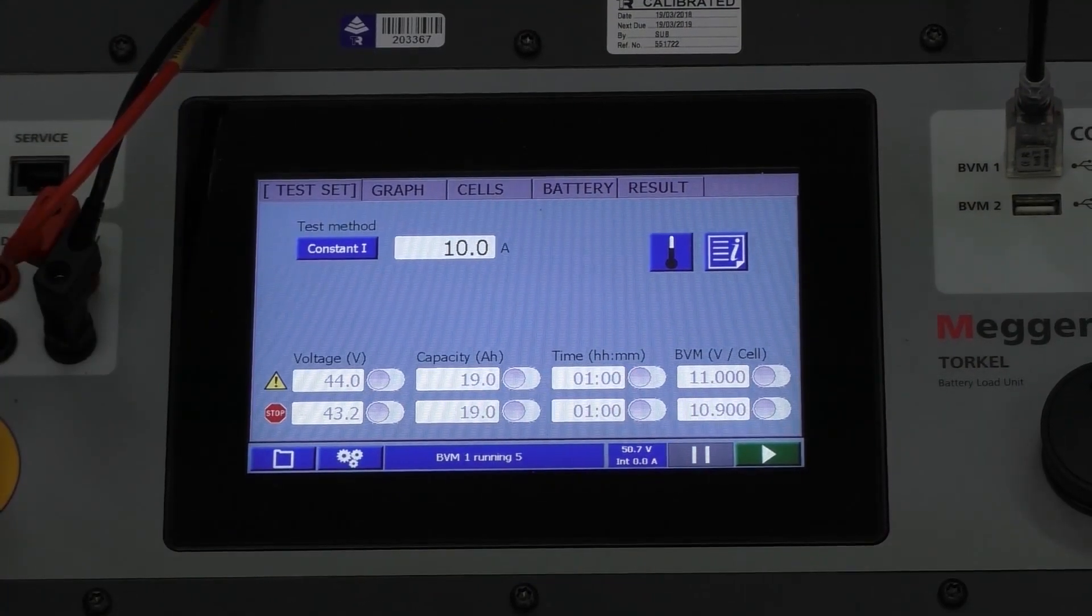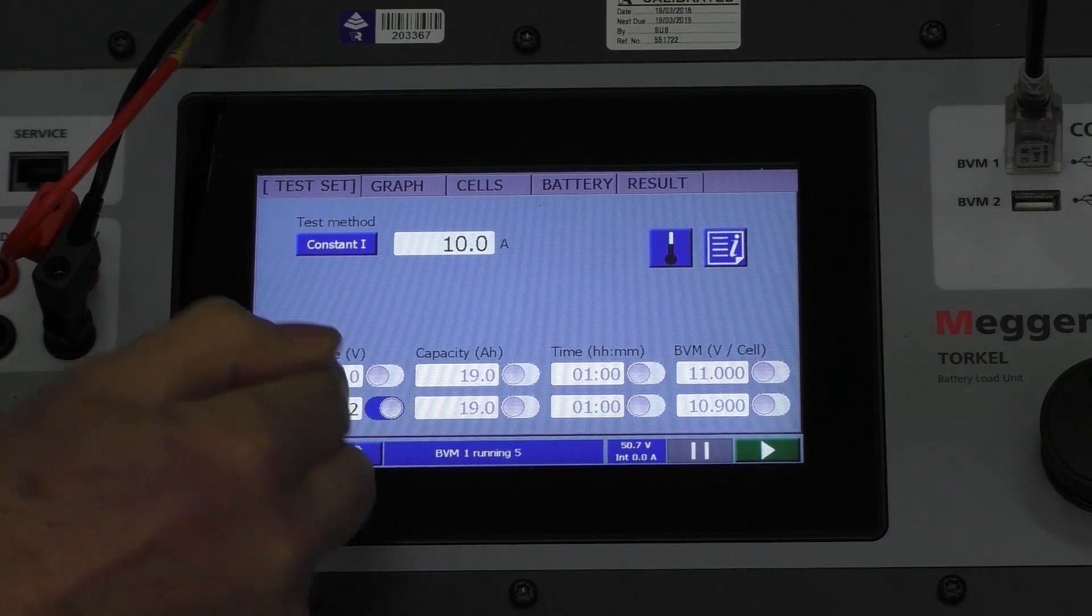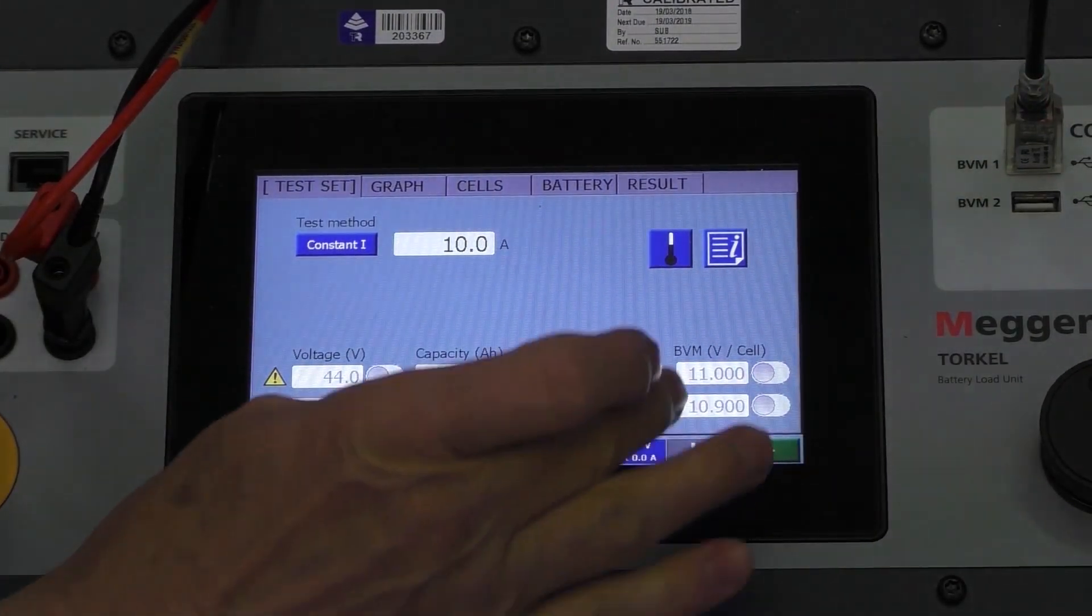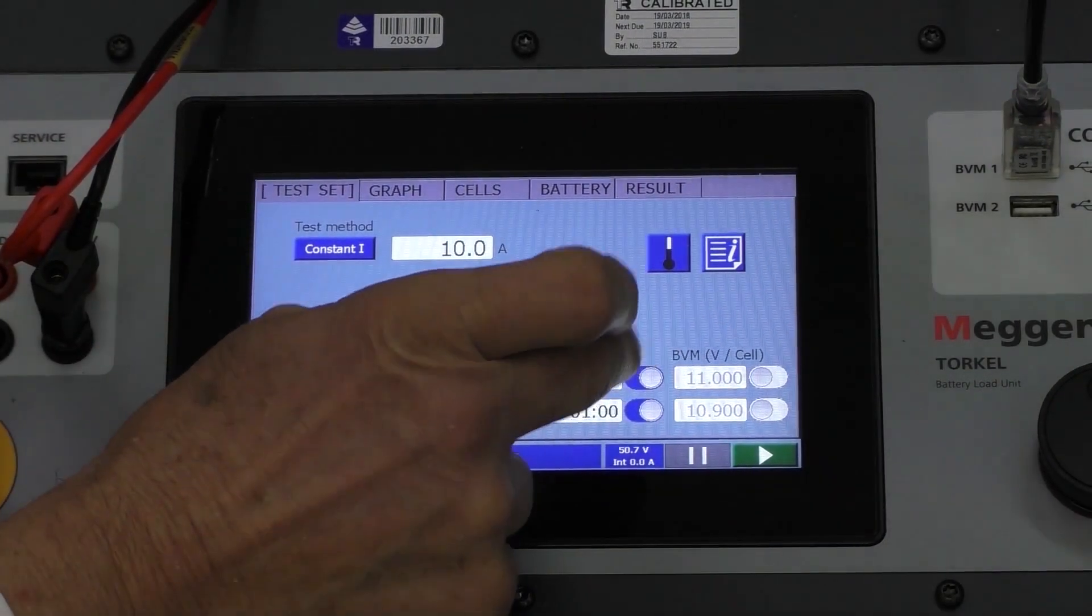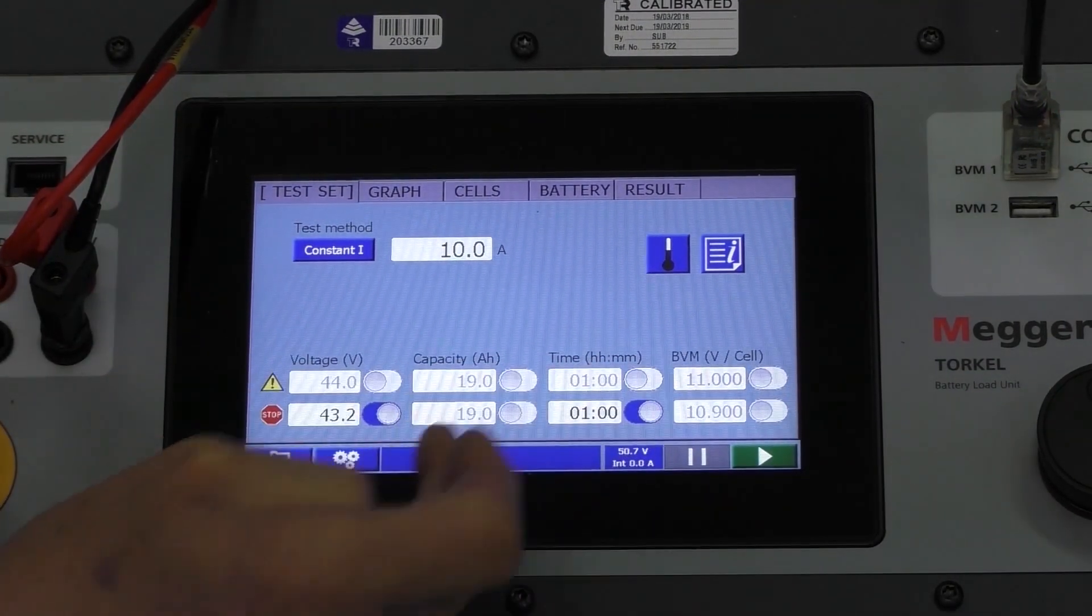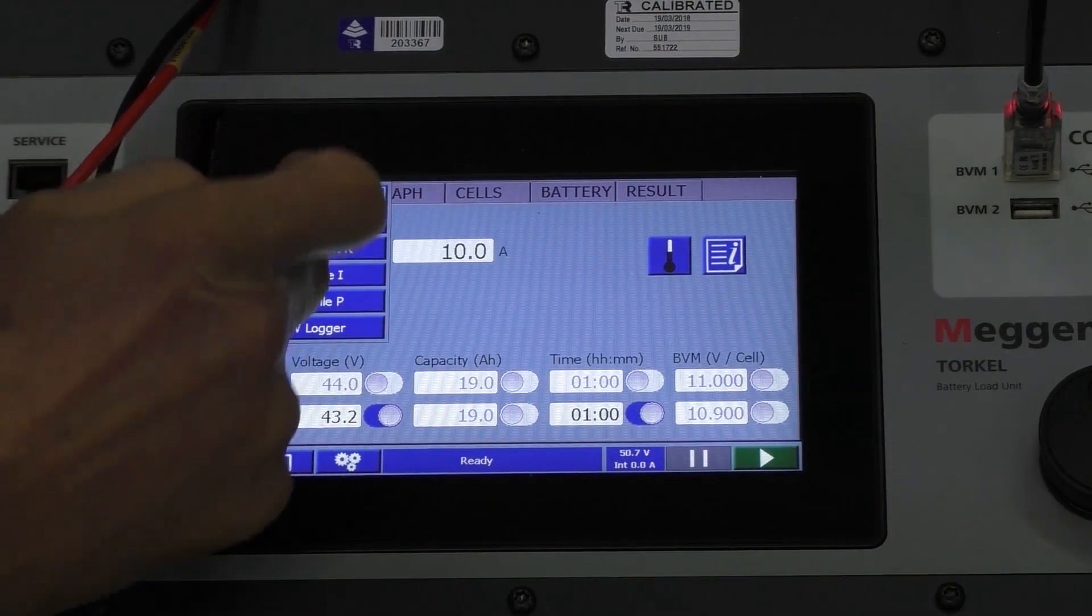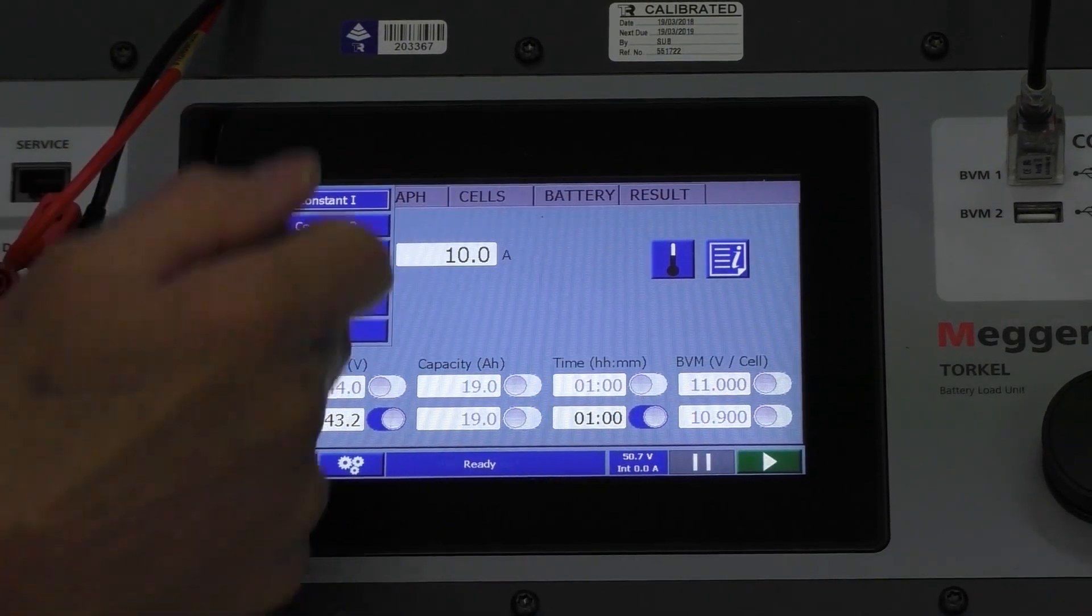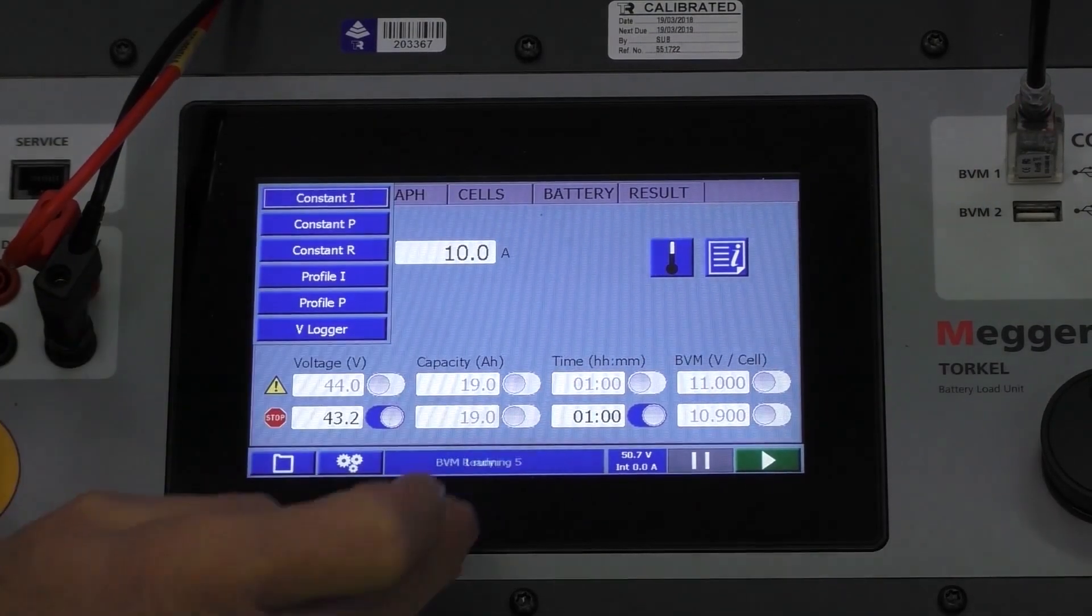Just go back to our test setup. I've entered in 43.2 volts because that's what happens to be in this case, the minimum cutoff. Test time, we're going to run it for one hour. So we'll stop the test after an hour. Now it's going to be a constant current drawn. We can actually set power and profiles, do all sorts of settings here. In this instance, we're just going to draw a constant 10 amps.